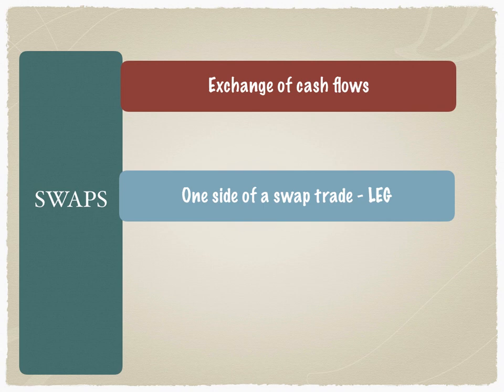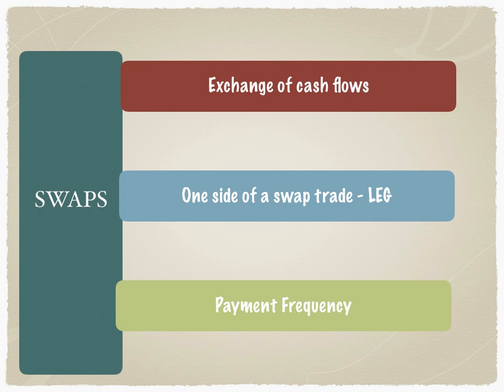What does this leg do? The leg shows what is the contractual obligation of the counterparty to the trade, and therefore it also mentions the payment frequency. All these terms are mentioned in the contract entered into between the two counterparties, and the payment frequency of the cash flows could be quarterly, semi-annually, or even annually. So it is very important to define what the leg of a swap is.